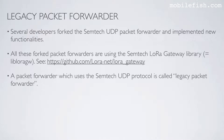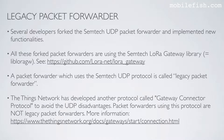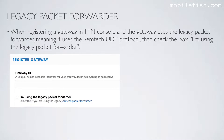A packet forwarder which uses the Semtech UDP protocol is called a Legacy Packet Forwarder. The Things Network has developed another protocol called the Gateway Connector Protocol to avoid the UDP disadvantages. Packet forwarders using this protocol are not legacy packet forwarders. When registering a gateway in the Things Network console and the gateway uses the Legacy Packet Forwarder — meaning it uses the Semtech UDP protocol — check the box "I am using the Legacy Packet Forwarder."